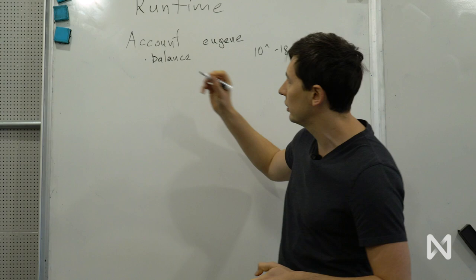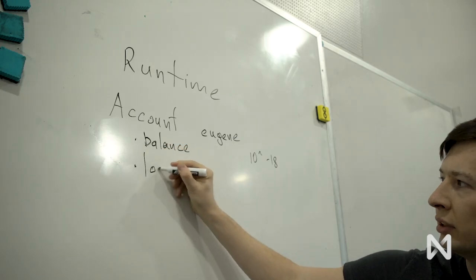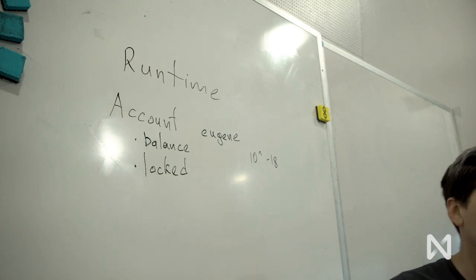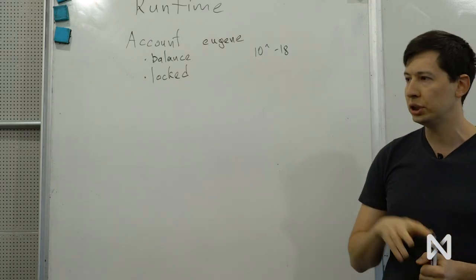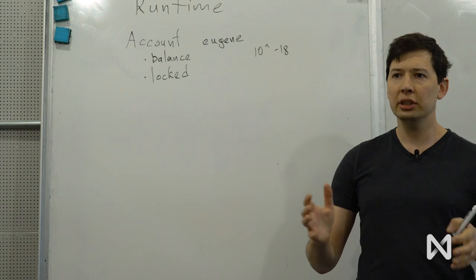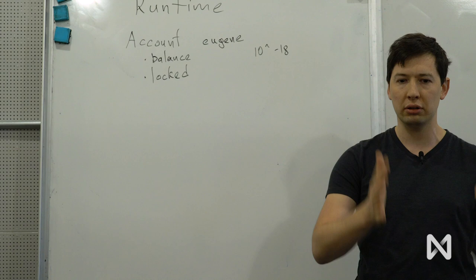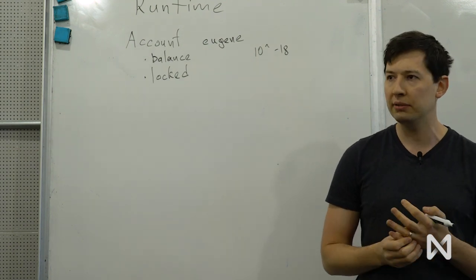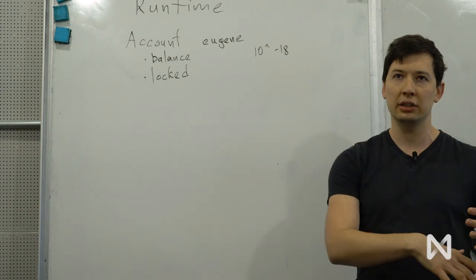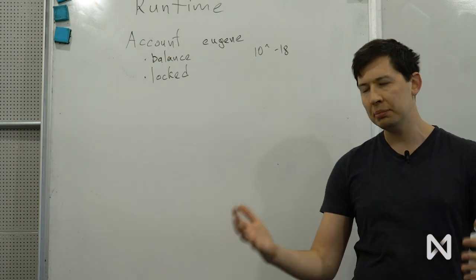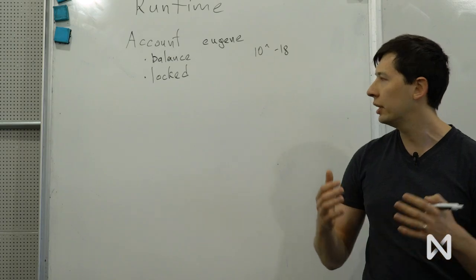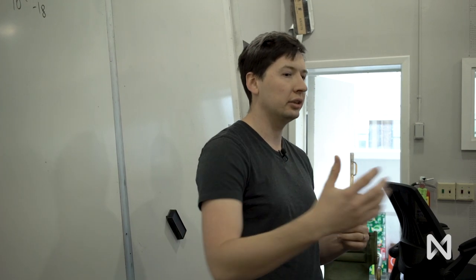Then on account, we also have locked balance. Locked balance is used for staking or indicating how much you wanted to stake or currently staked. NEAR is a proof of stake system, and stake is the locked balance that is used by the validators. If validators act properly, they earn more stake or more rewards. And if they act maliciously, they're going to lose their stake. So stake guarantees for validators to act properly.